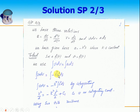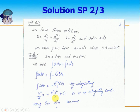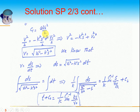Integrating: V²/2 = −k²S²/2 + C₁. Using the initial condition S = 0, V = V₀ (maximum velocity), C₁ = V₀²/2. Substituting back: V²/2 = −k²S²/2 + V₀²/2, which simplifies to V² = V₀² − k²S², so V = √(V₀² − k²S²). We now have the relationship between velocity and displacement.